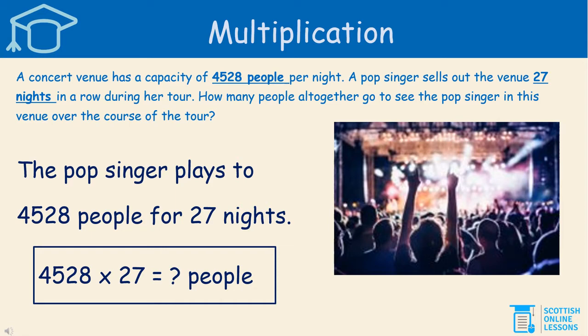We're looking at multiplication in this lesson. Here's a word problem: a concert venue has a capacity of 4,528 people per night. A pop singer sells out the venue 27 nights in a row during her tour. How many people altogether go to see the pop singer in this venue over the course of the tour? She sells out every single night, which means every single ticket is bought — full capacity. So there must be 4,528 people per night, and the pop singer plays to that amount of people for 27 nights. So to find the answer, you would do 4,528 times 27. We must always include the units.